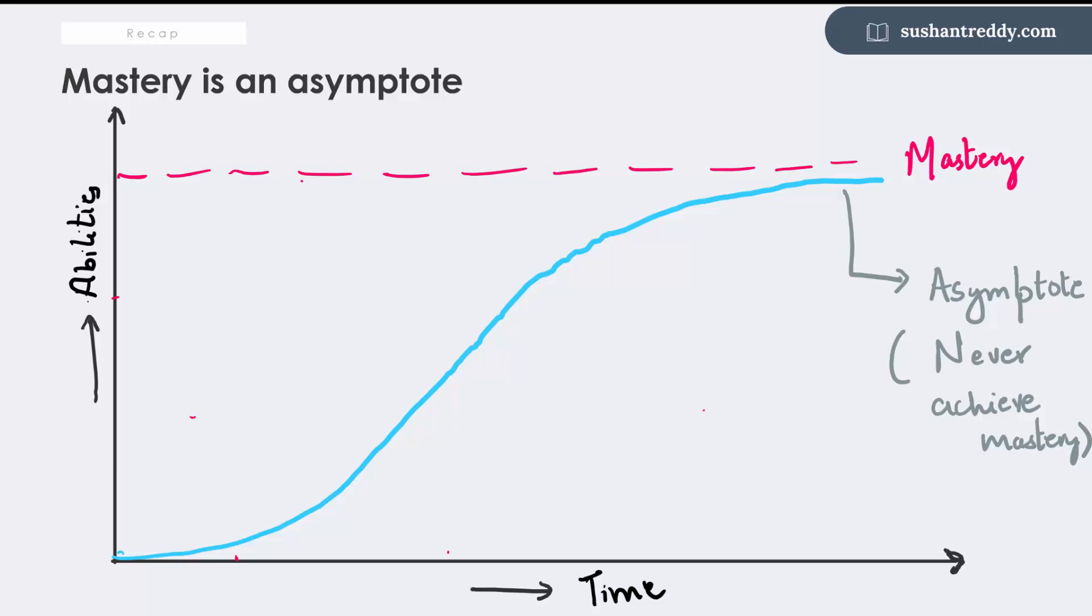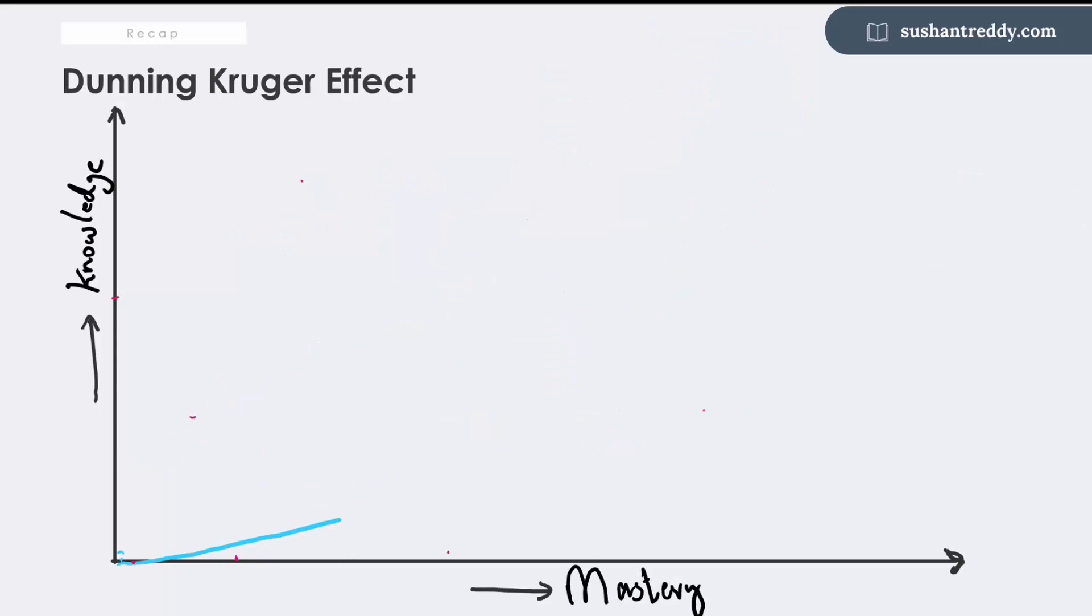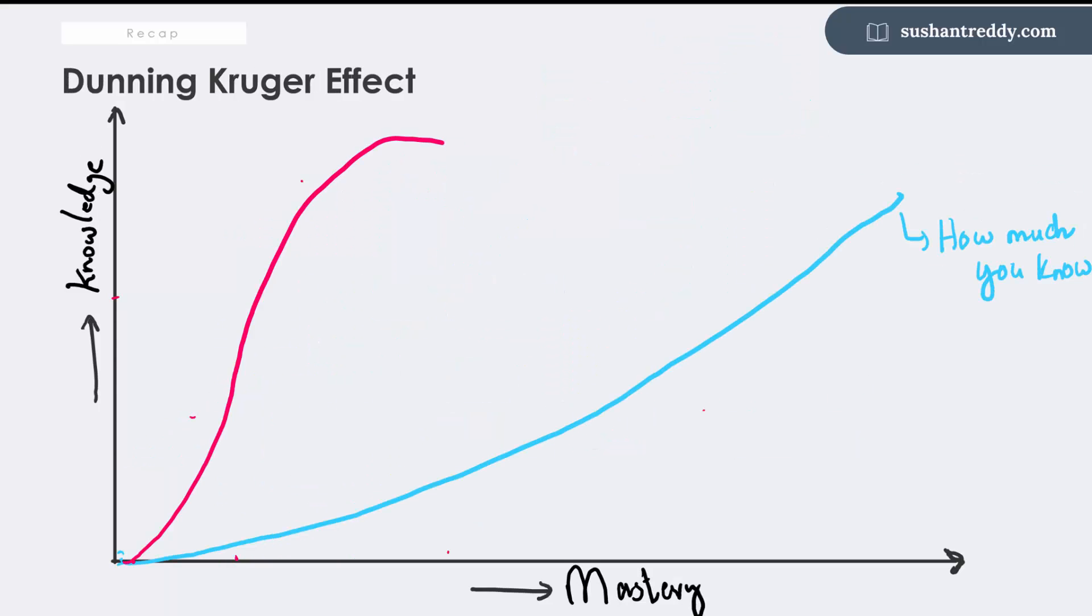We touched upon Mihaly Csikszentmihalyi's state of flow, where skill just about matches challenge. Such a condition is ideal to sustain the internal motivation to master the skill. We also spoke about the Dunning-Kruger effect, where the more we know, the more we understand how little we know.